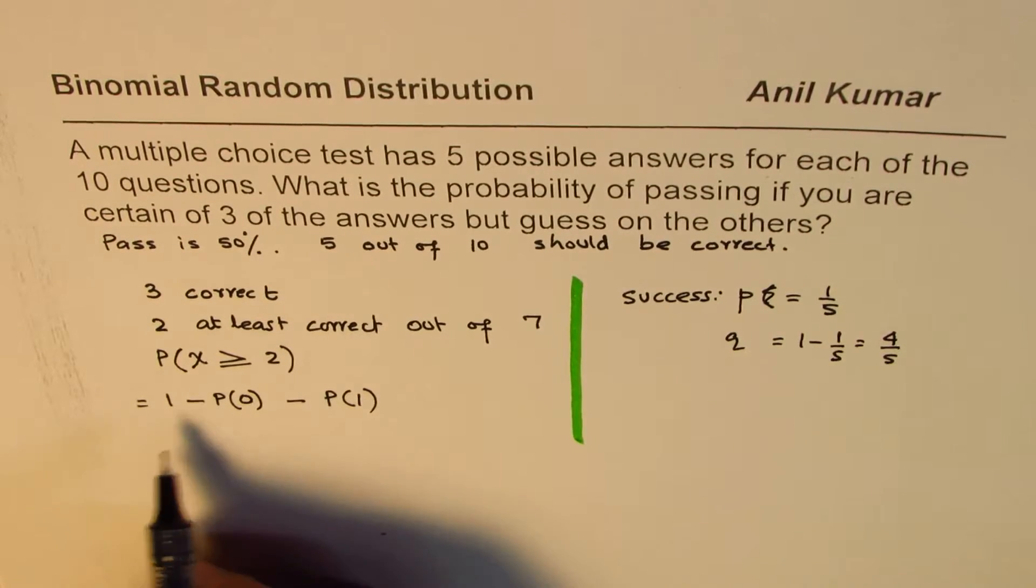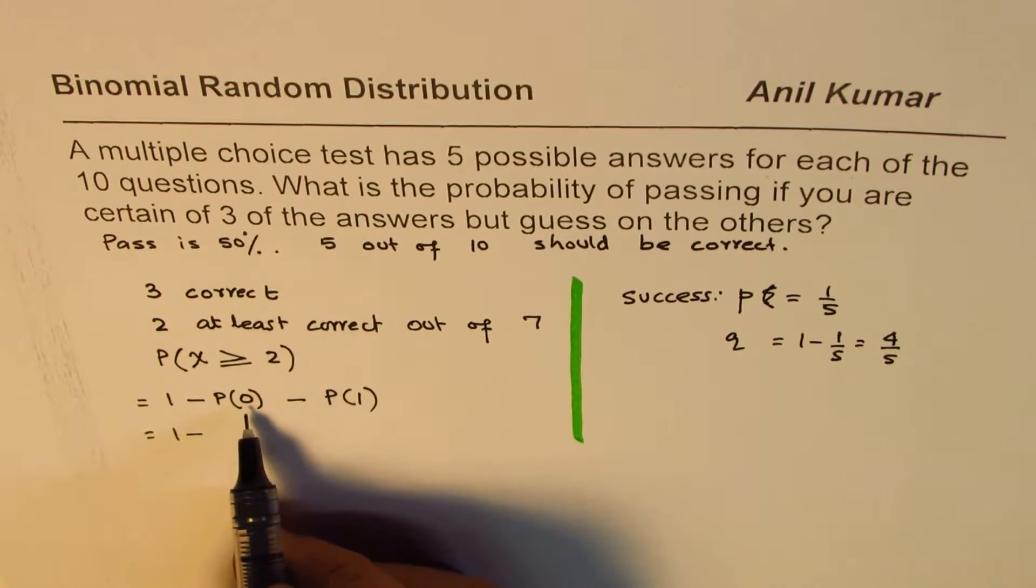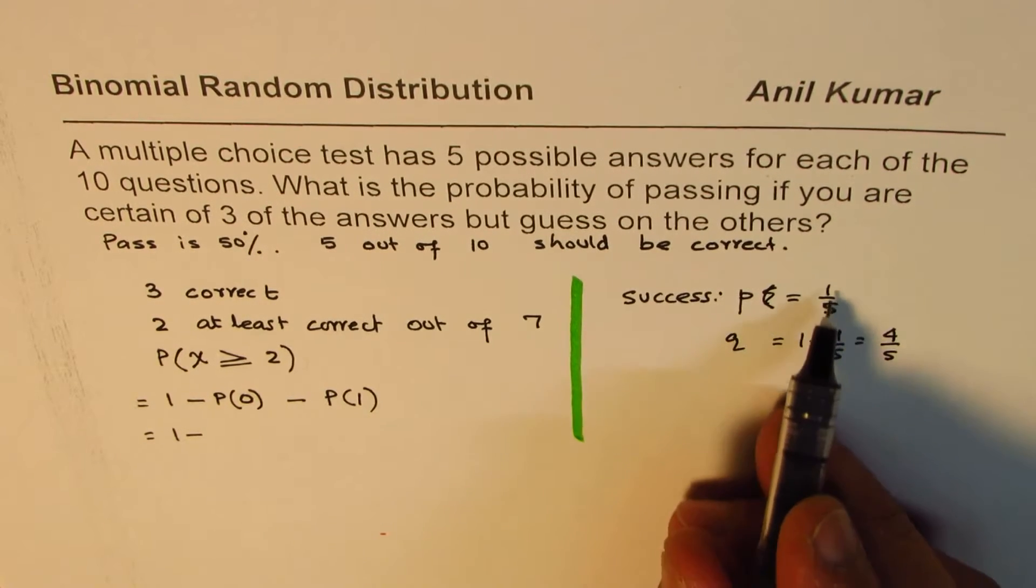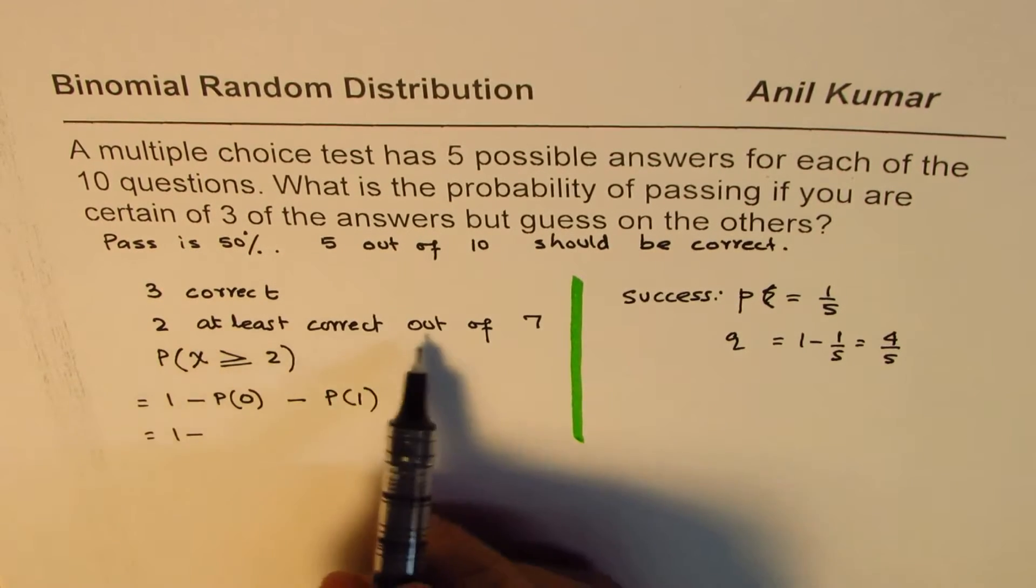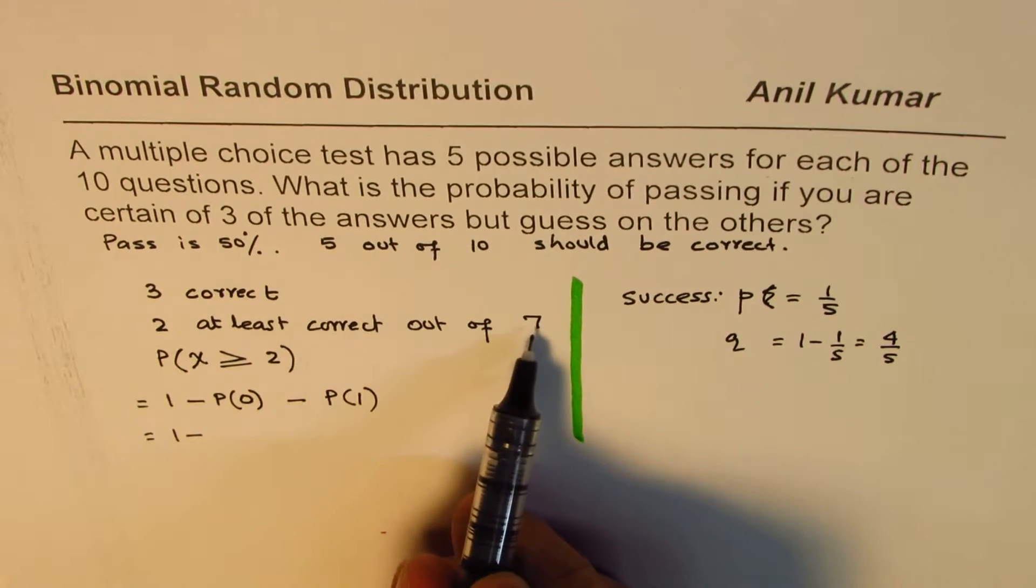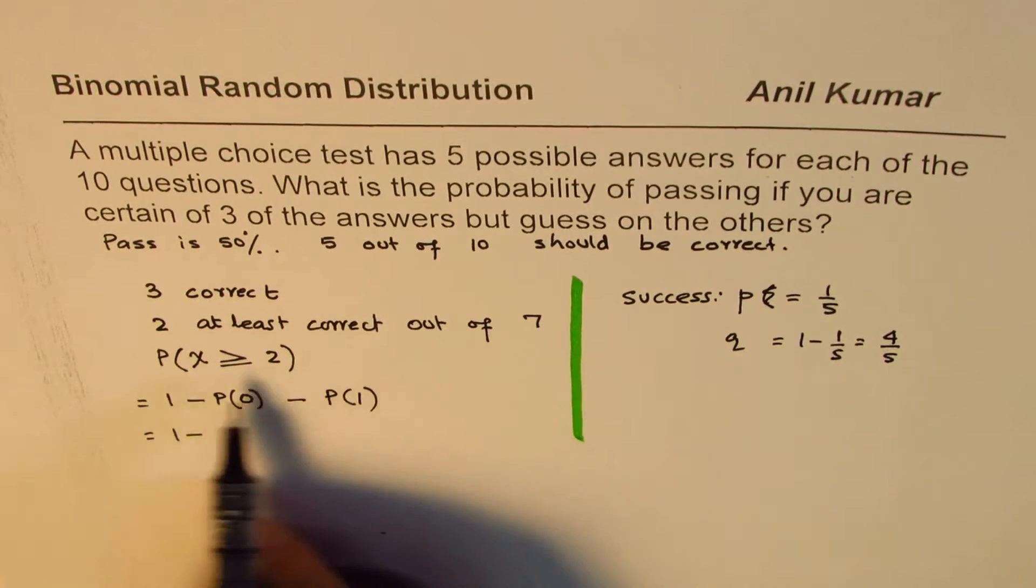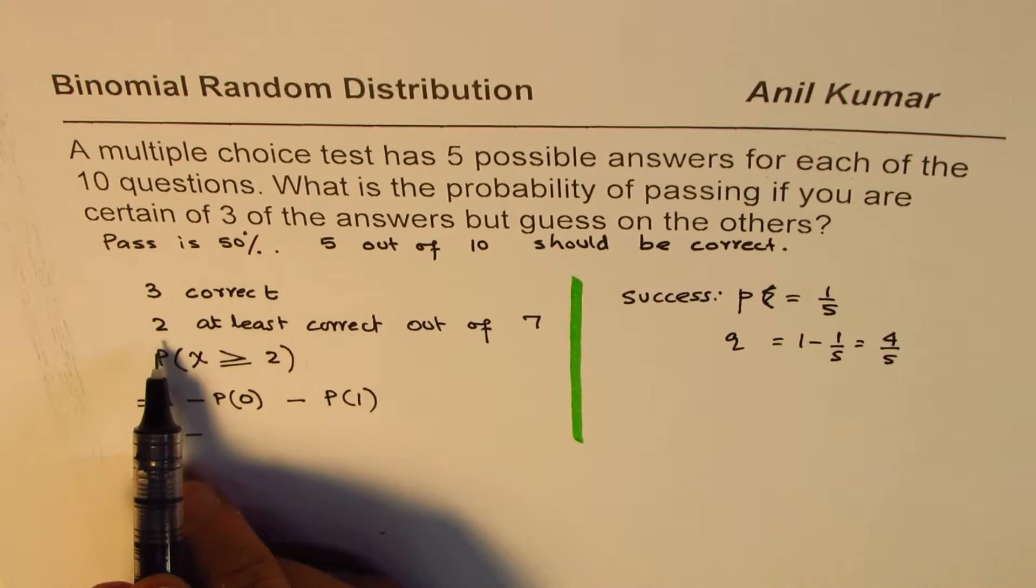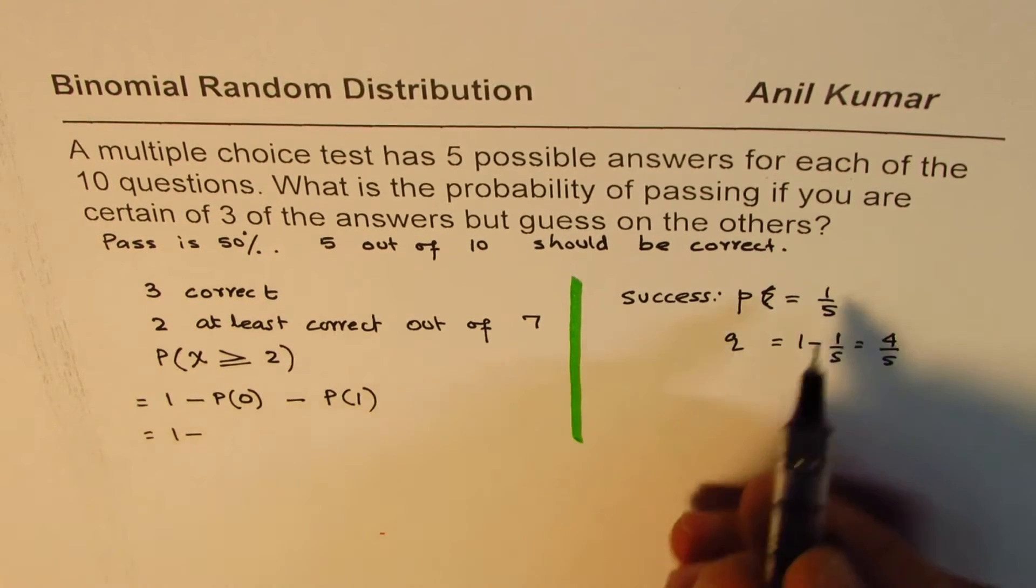Now, when we say that we want to find probability of all wrong, that means no correct. So we can write this as, we're looking for out of 7 now, 3 we already know. So out of 7, we want to get no correct.